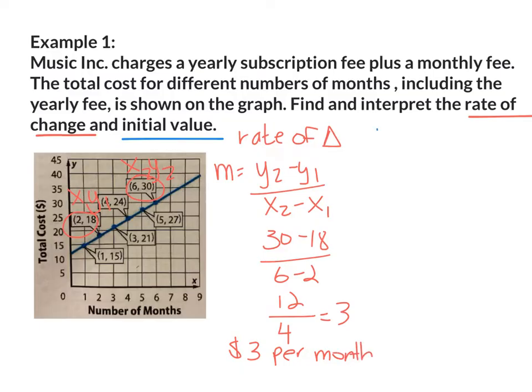Now let's find the initial value. So I need the equation y equals mx plus b. I'm going to use the point 2, 18. So I know that y is 18. M is my slope and we figured that out. It's 3.